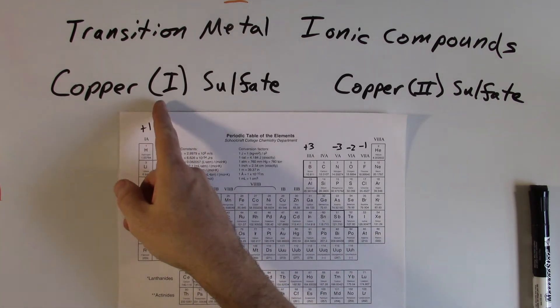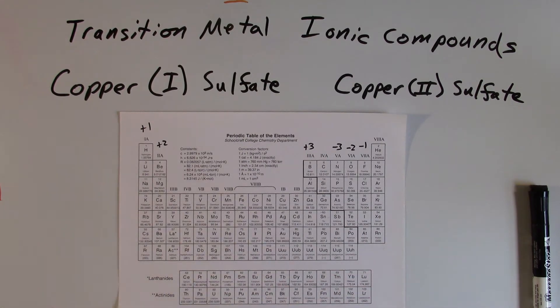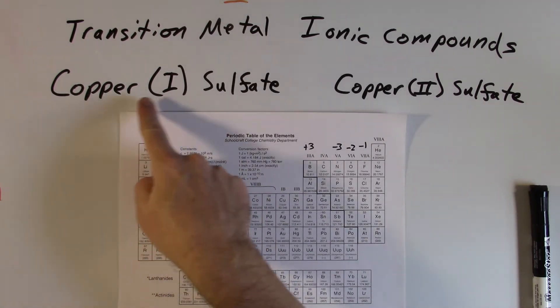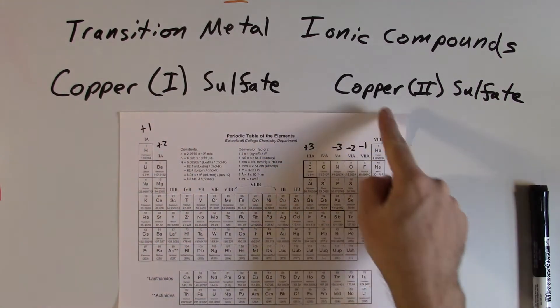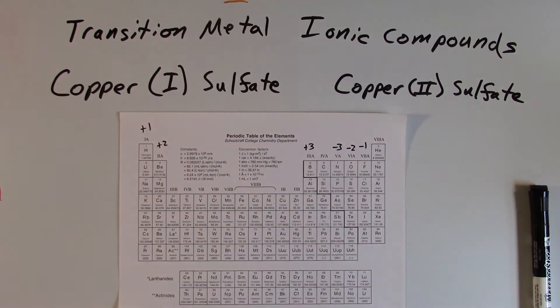For example, copper. Sometimes copper has a plus one charge. Copper can have a plus two charge in other compounds. So it's very much dependent on what substance it happens to be in. And so we see that evidence of that in the name itself. For example, here you can see I have copper with a Roman numeral one sulfate and copper with a Roman numeral two sulfate. And so those are two different copper compounds.